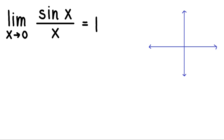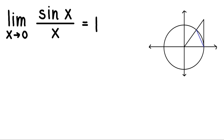Let's first have a unit circle, and then plot a triangle with a line around here. Since this is a unit circle, the radius is equal to 1, as well as this other segment equal to 1. For this angle, let's denote that as x. So this is what we'll be needing in order to prove this.